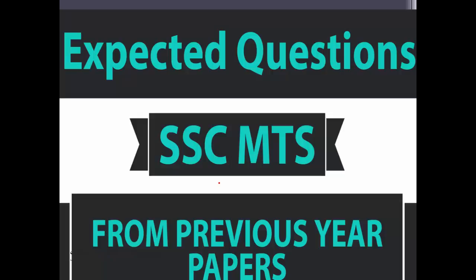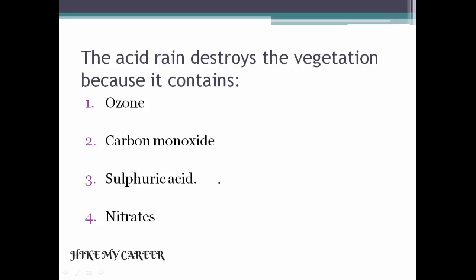So let's start. The acid rain destroys the vegetation because it contains: option one ozone, option two carbon monoxide, option three sulfuric acid, option four nitrates. Answer is option three, sulfuric acid.